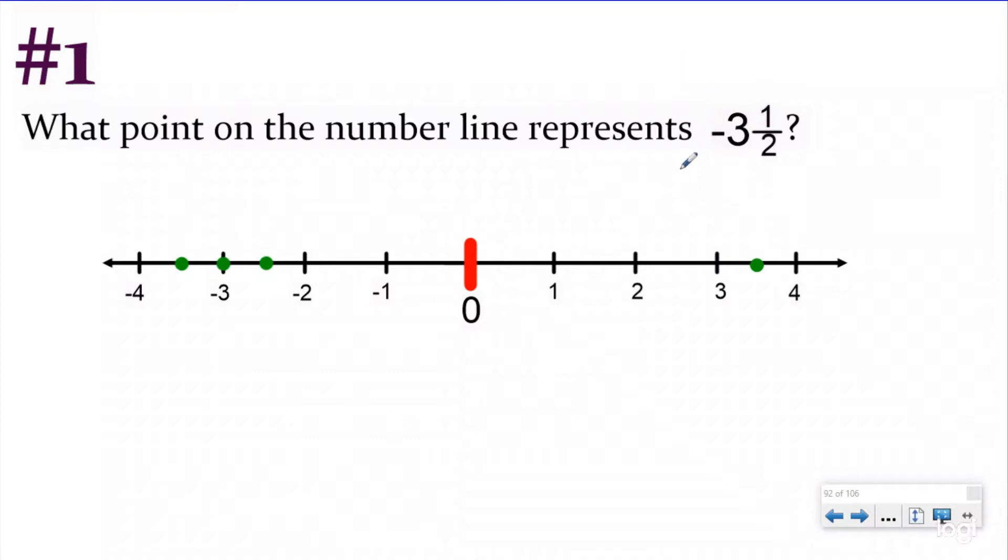It says what point on the number line represents negative three and one half. I know the negative sign is directional. It's telling me to do the opposite of positive three and one half. So I'm going to be going to the left of my zero on my number line. I know I'm going to be going three whole units. So one, two, three, and then a little bit more, which would be this dot right here. This is negative three and one half.